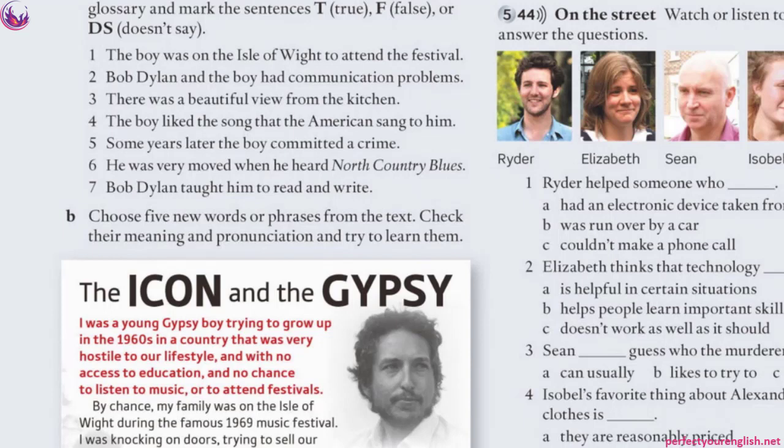Number 4: 'The boy liked the songs that the American sang to him.' DS — doesn't say. The text only says the American sang to him and played guitar; whether the boy liked it isn't mentioned. Number 5: 'Some years later the boy committed a crime.' True — he went to Brixton prison for burglary. It's not stated exactly as 'committed a crime' but burglary is a crime — another paraphrase. Number 6: 'He was very moved when he heard North Country Blues.' True — he cried, which shows he was deeply moved.